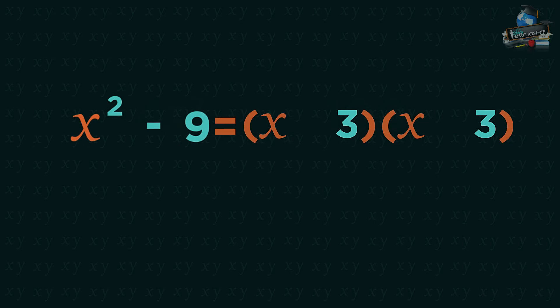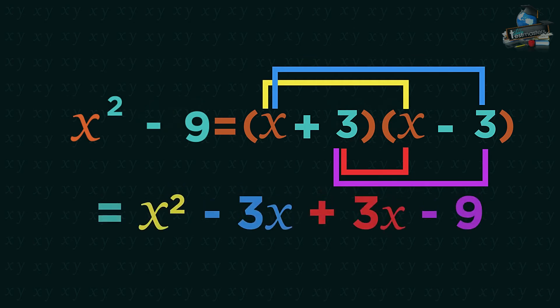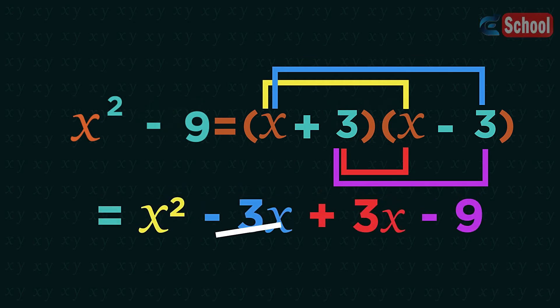Because there isn't an x term in these special quadratics, one bracket needs to be a plus and the other a minus. By having one plus and one minus, when we expand the brackets this will eliminate the x term completely, leaving us with just an x squared minus a number.